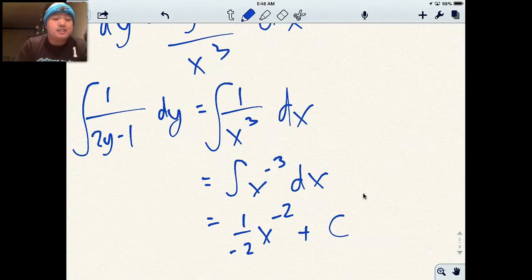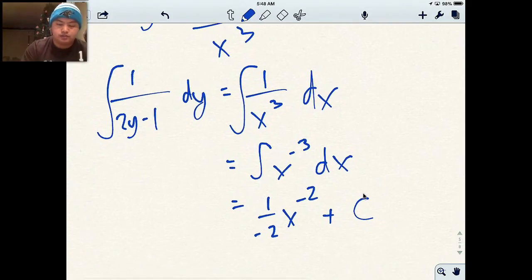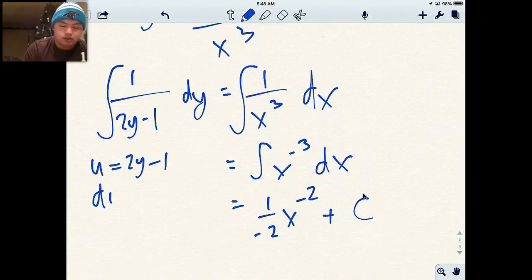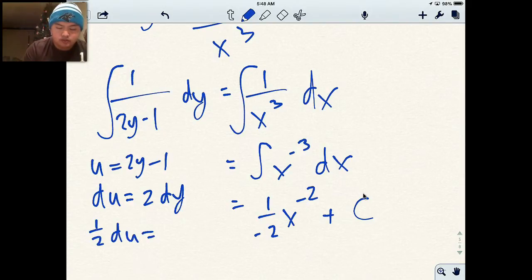On the left side, it's not as easy because I can't take the antiderivative of 2y minus 1. So what I'm going to end up doing is I'm going to call 2y minus 1 u and use u-substitution. So u is 2y minus 1, du is 2dy. In this particular problem, I don't have a 2dy, I have a 1dy, so I'm going to divide both sides by 2. This becomes half du equals dy.